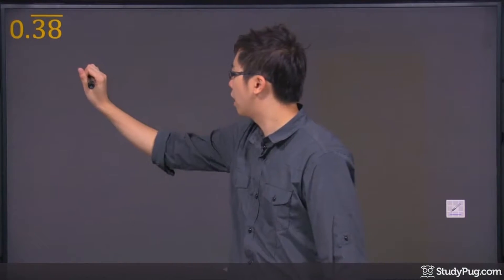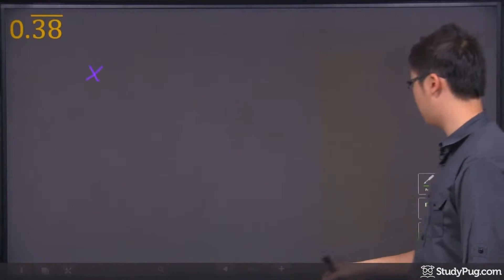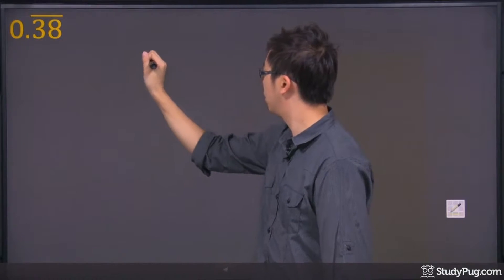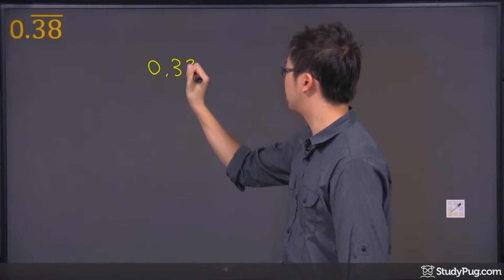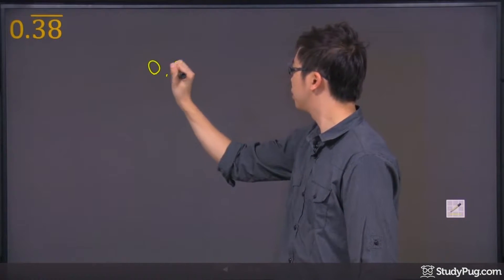So first of all, you're going to write down x. So let me do a quick change of my pen here. So you're going to write a little x equals to 0.38 repeating. And these are the decimals, right?